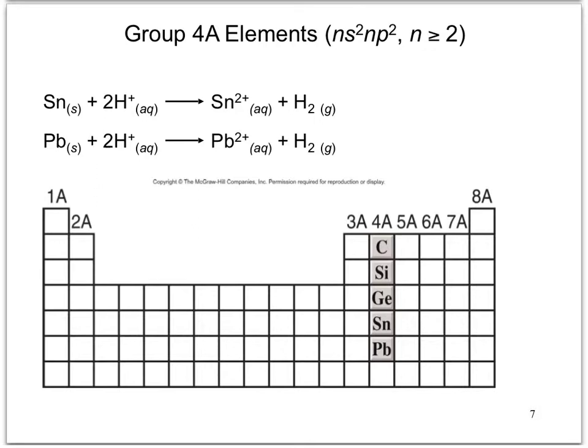Silicon and germanium are metalloids. Tin and lead are the only metals in group 4A. These group 4A metals react with hydrogen ions to form the plus-two ion and hydrogen. The plus-two ion is the most stable form.